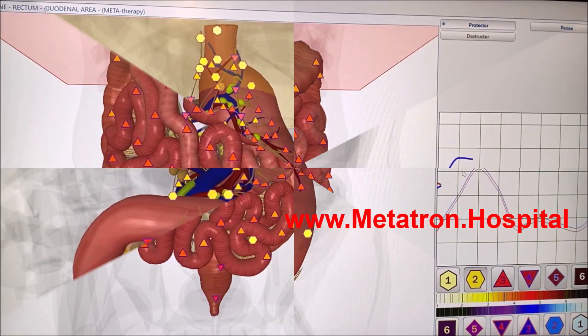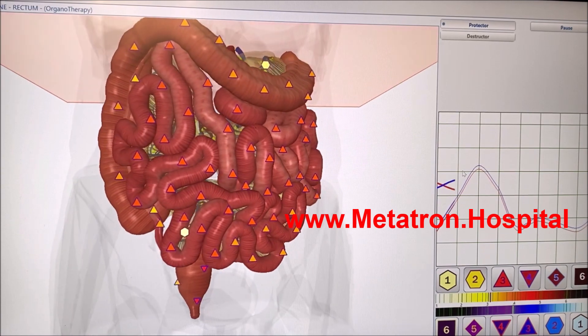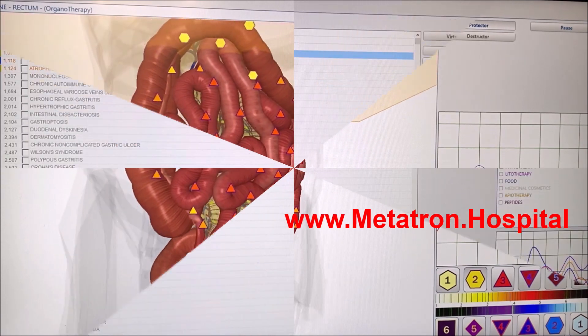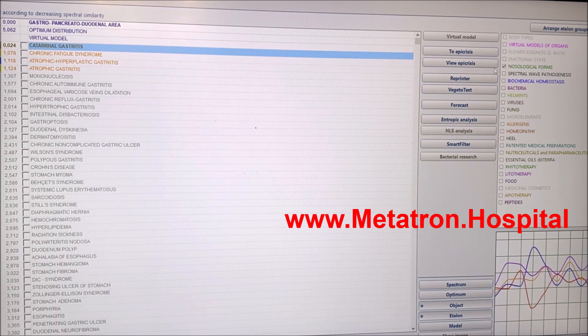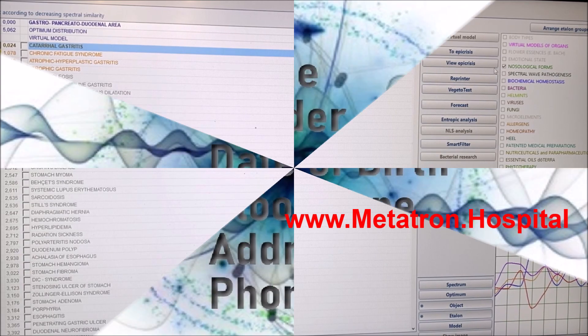The Metatron system applies the following therapies: elimination of viruses and bacteria, organotherapy, Bach therapy, metatherapy, phytotherapy, lithotherapy, and acupuncture.